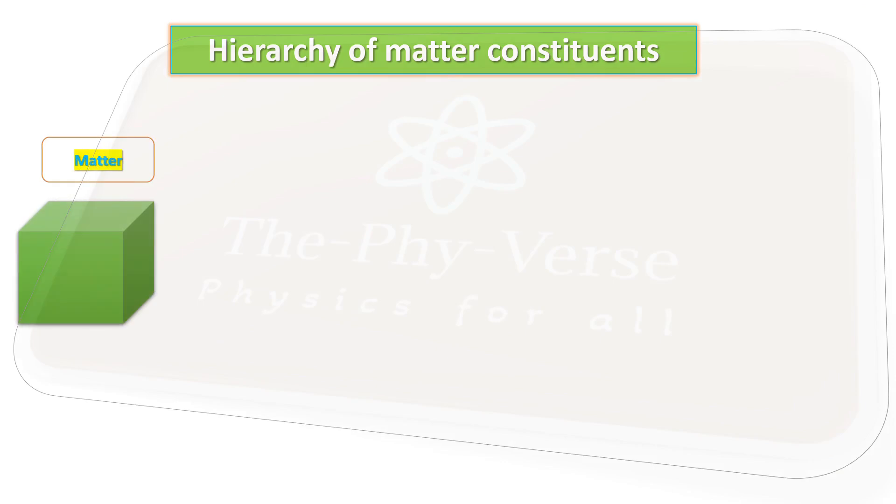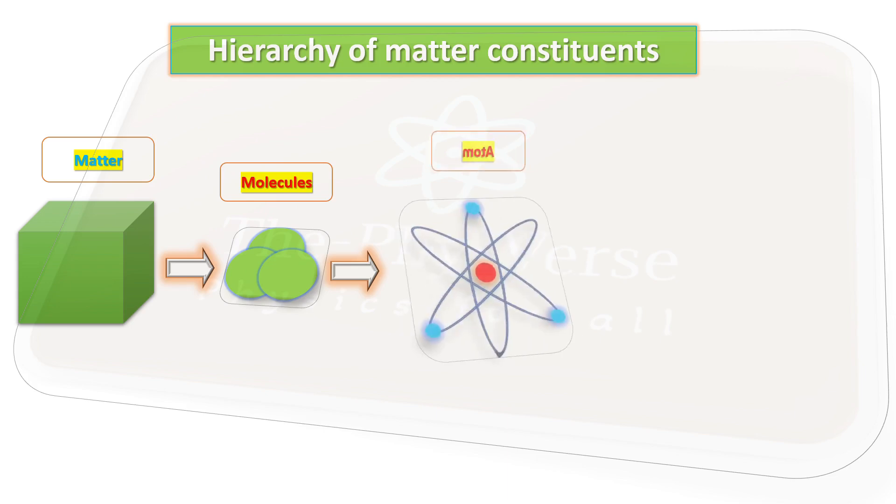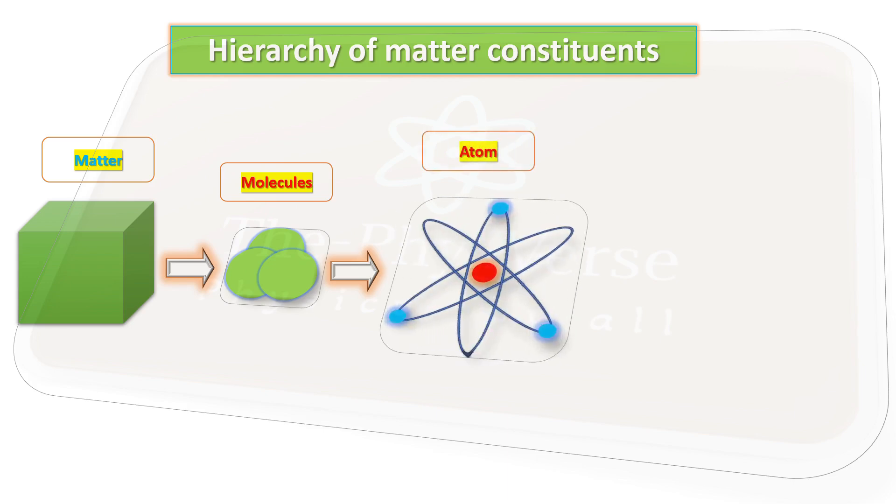Before going to the problem, I will present you a hierarchy of matter constituents. Basically, matter is made up of a collection of molecules. If I broke the matter, what will you get? You will get molecules, which are made up of atoms, which contain electrons and nucleus.